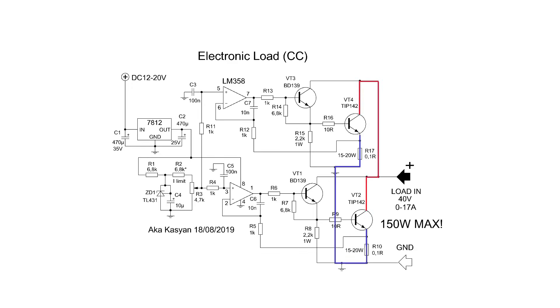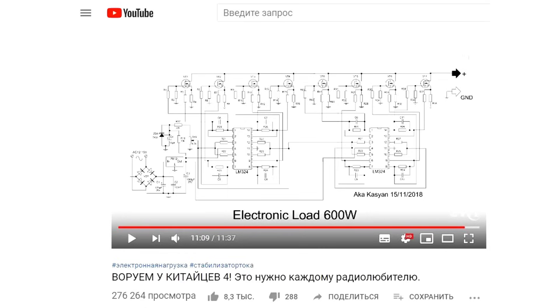The transistors, you could say, are connected in parallel, but are controlled by different channels of the operational amplifier. According to this principle, you can connect as many transistors as you want. I have already shown an example of a 600W load circuit, but this is far from the limit.